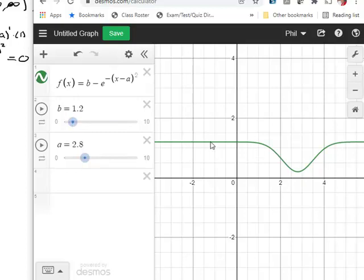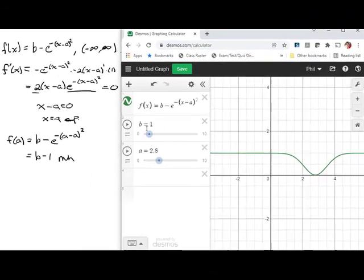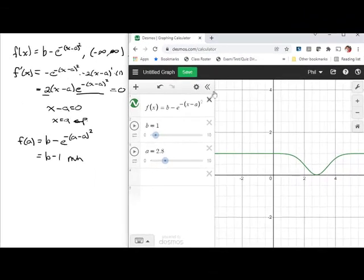Now, what we see at the top is we've got a horizontal asymptote. Essentially, if we move b back to one, you'll be able to see it at one or at b. So we do not have a maximum.